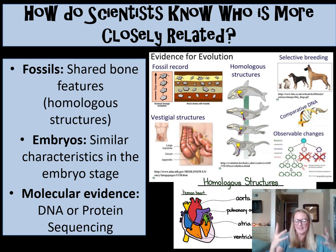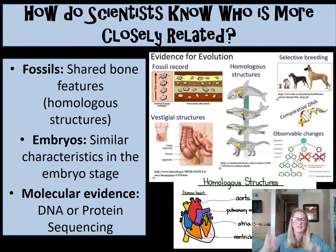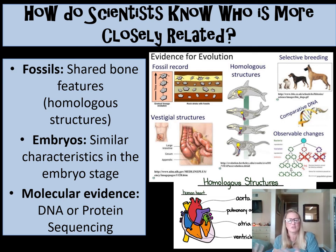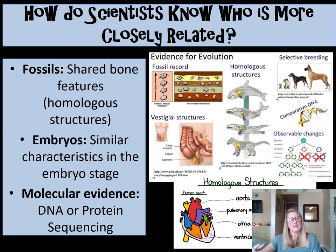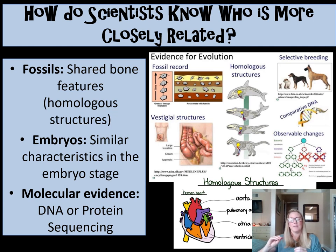How do scientists know who is more closely related? There are three main pieces of information. Number one, fossils — scientists dig up fossils and look at bone structures to see if they look similar to other organisms, suggesting close relation. They also look for transitional fossils — bones that can be found in different species across time — so they can figure out who came first and where that species went.